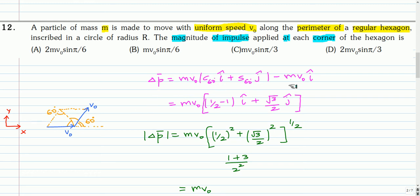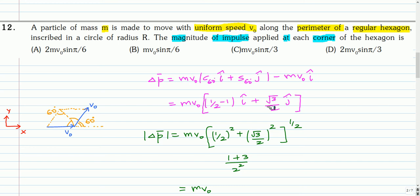The change in momentum is the final momentum minus the initial momentum; momentum is a vector quantity. Taking the x-axis to the right and y-axis vertically up, the final momentum is mV₀ with x-component V₀ cos 60 î and y-component V₀ sin 60 ĵ. The initial momentum is minus mV₀ î. Taking mV₀ common, the i-component is cos 60 minus 1, where cos 60 is 1/2 and sin 60 is √3/2. Taking the magnitude: (1/2)² + (√3/2)² equals 1. So the magnitude of the impulse at each corner is mV₀. The correct option is option A.